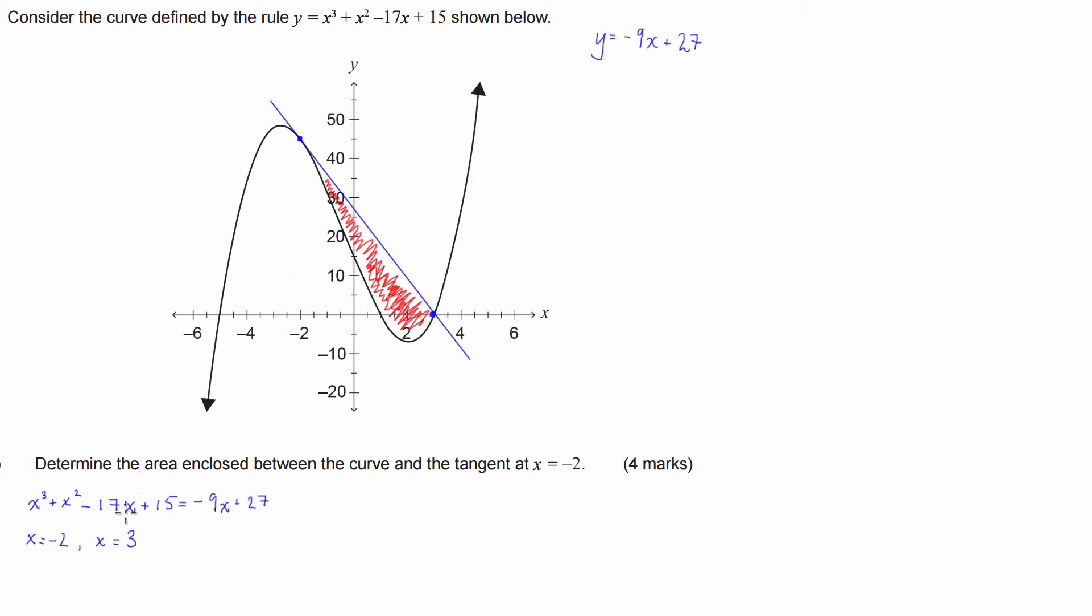The way we're going to go about that is we're going to take the integral from negative 2 to 3 of the function that goes above, so that's the tangent equation, negative 9x plus 27, and subtract the function that goes below, which is the equation we're given: x cubed plus x squared minus 17x plus 15 dx.